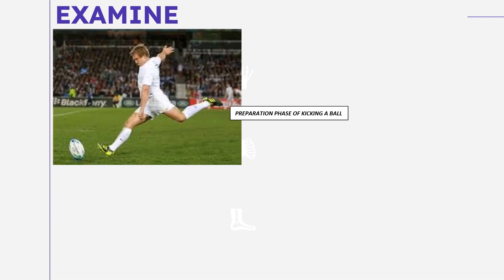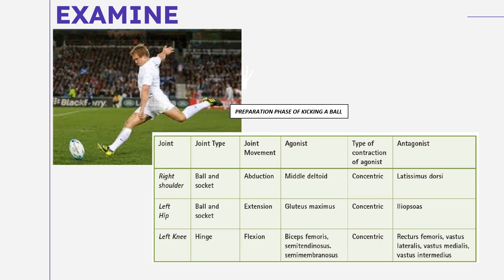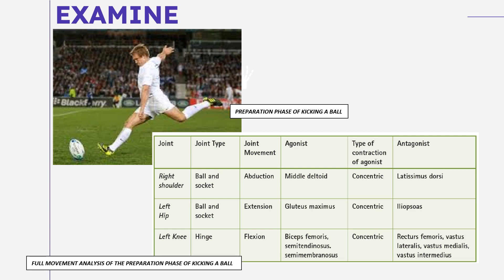This is an example. This picture shows the preparation phase of kicking a ball — a man playing football, preparing to kick. This is the full movement analysis for the preparation phase of kicking a ball. The joints involved are: the right shoulder, the left hip, and the left knee.